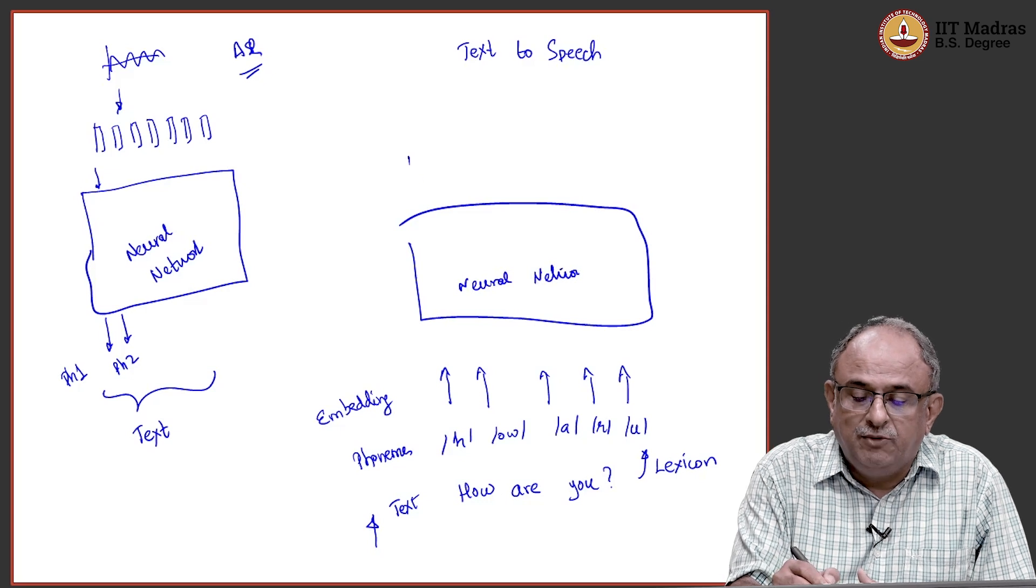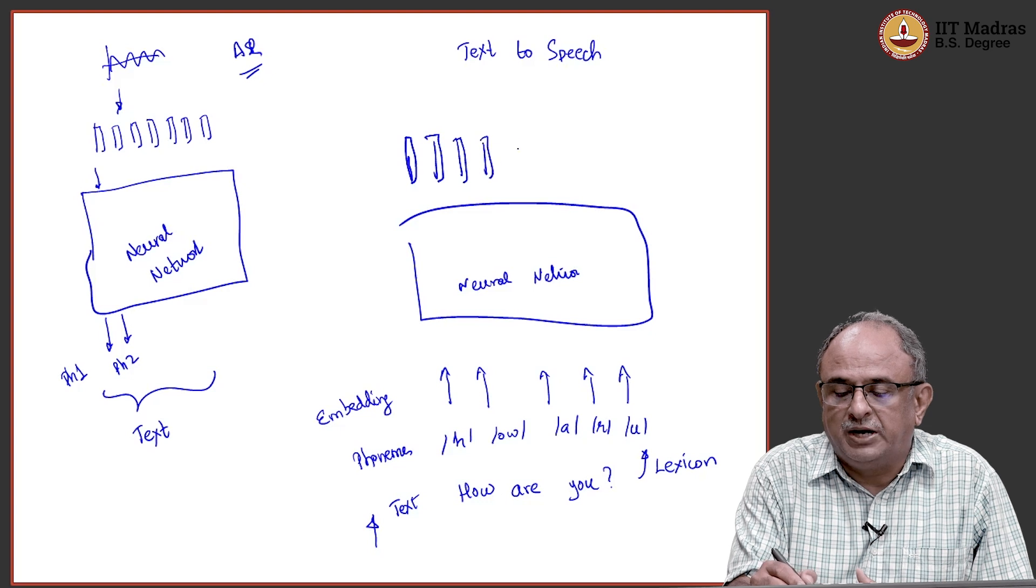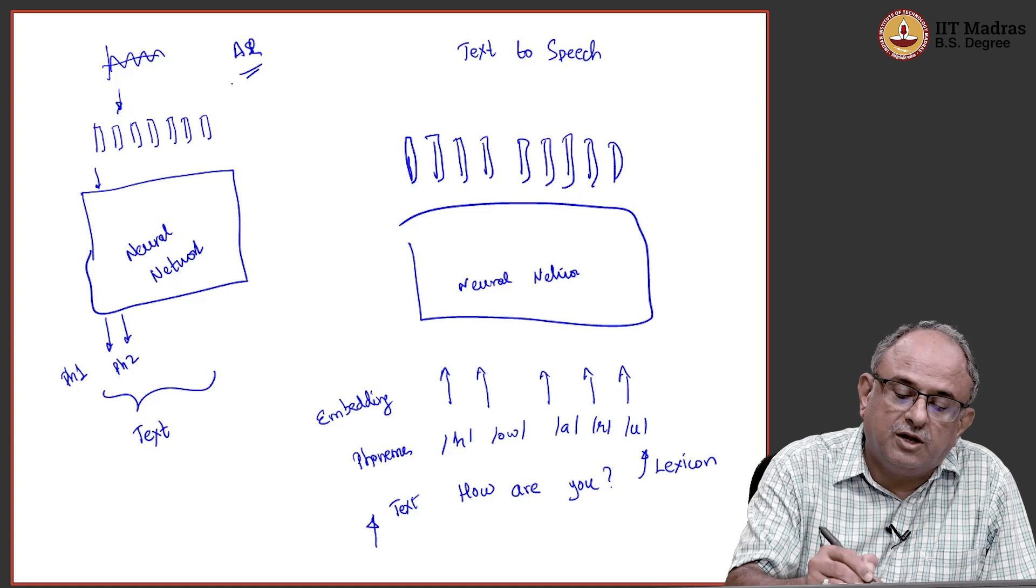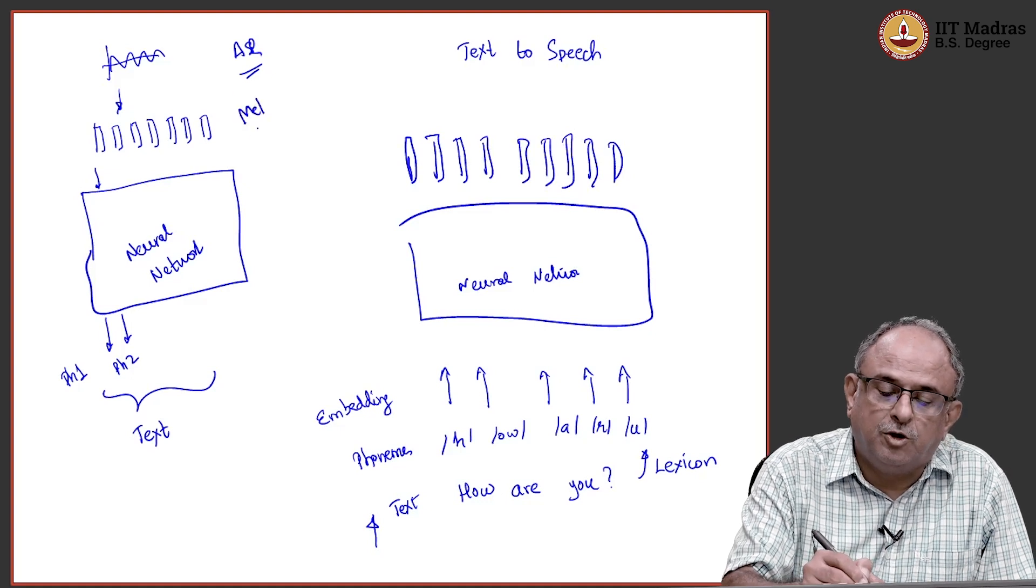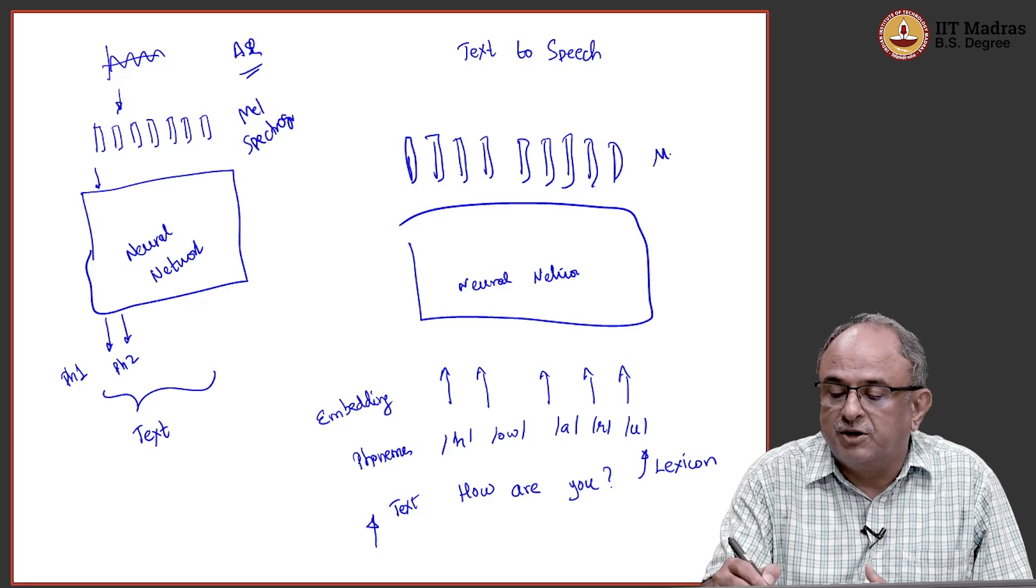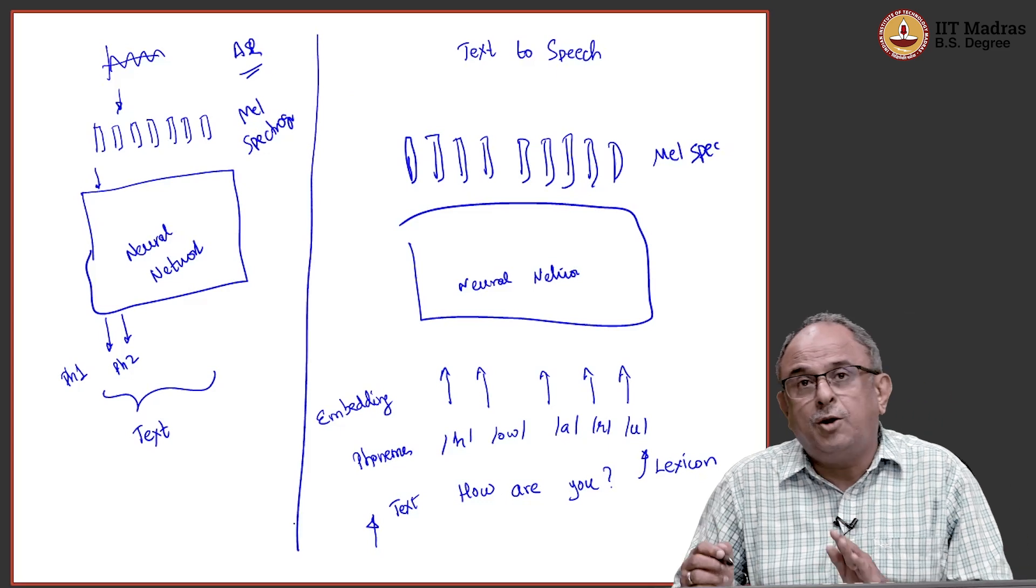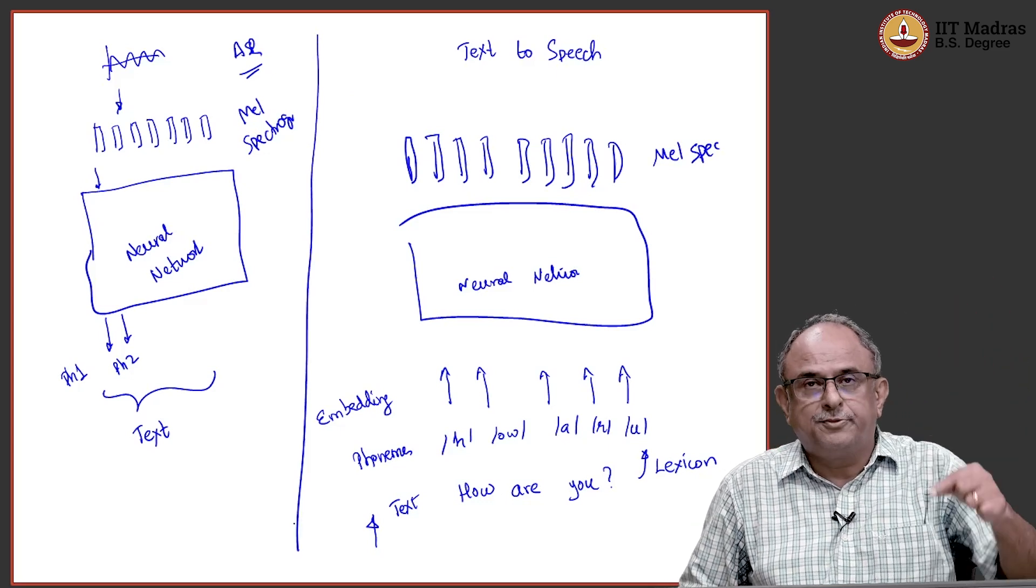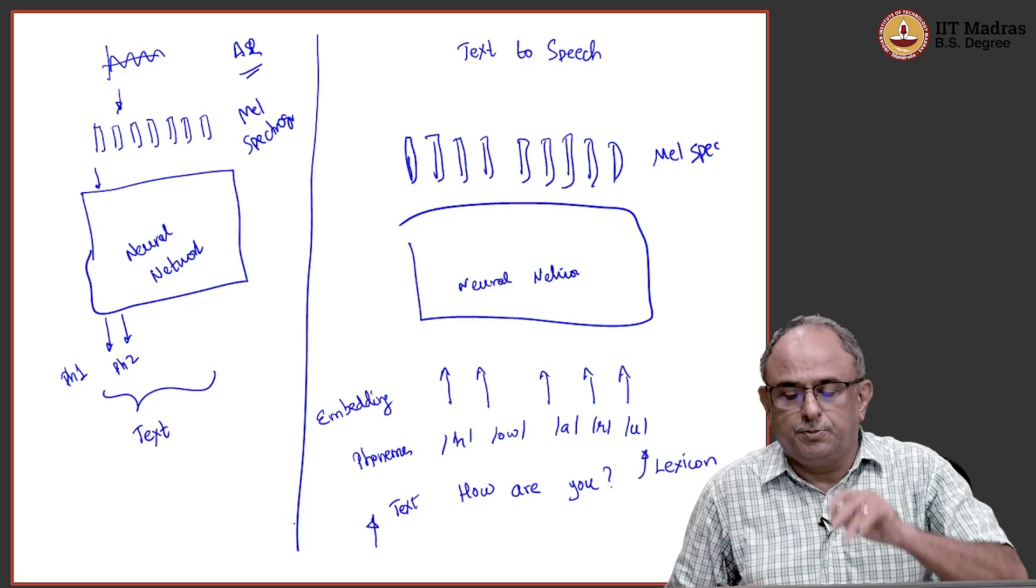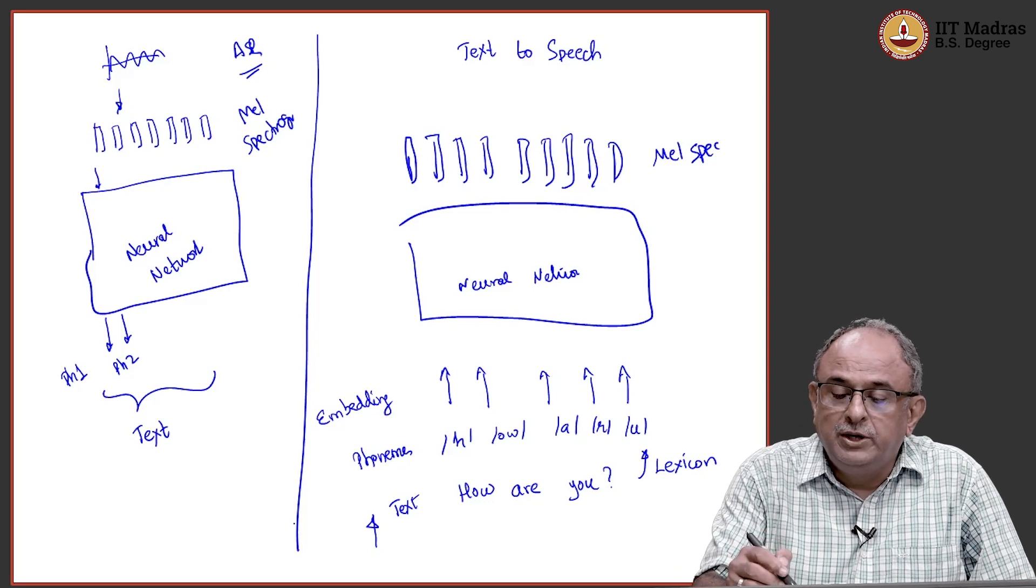Then I have a big neural network. And now, I want to get these acoustic Mel filter bank vectors here. These are Mel filter bank or Mel spectrogram. So, I need Mel spectrogram. Except now, remember, I am going in the opposite direction. In the ASR, I came from top to bottom. In the TTS problem, I am going to go from bottom to top. So, therefore, you will get this.